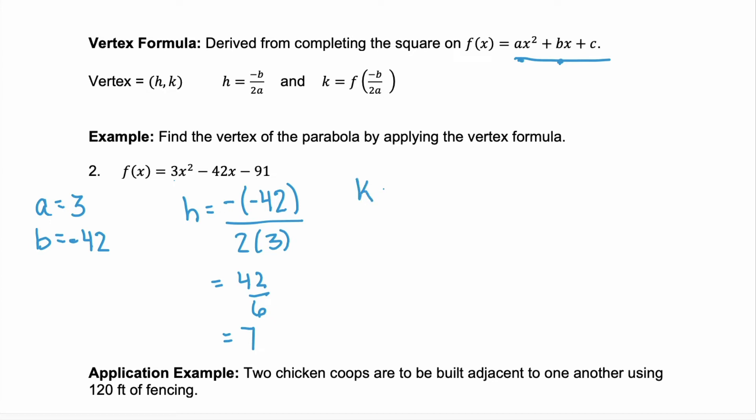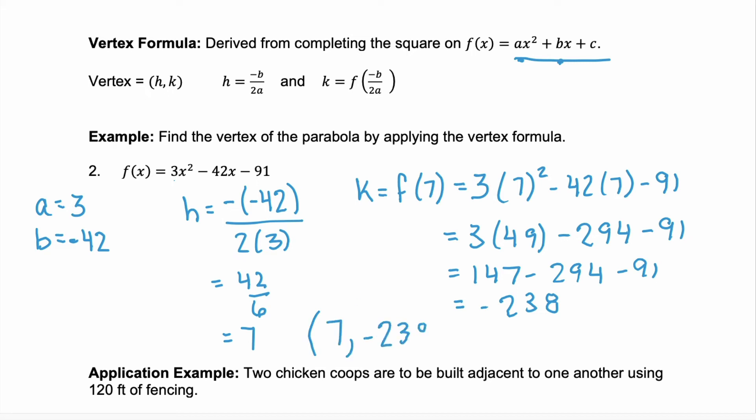To find k, we're going to find f of 7. So we're substituting 7 into our given quadratic. We have 3 times 7 squared minus 42 times 7 minus 91. So 3 times 49 minus 294 minus 91. So that's 147 minus 294 minus 91. Sheesh, that simplifies to negative 238. That's a big number. So our vertex is the point 7, negative 238.